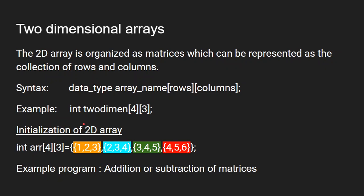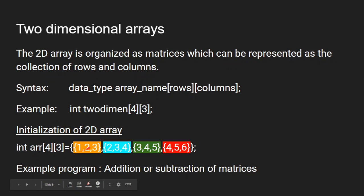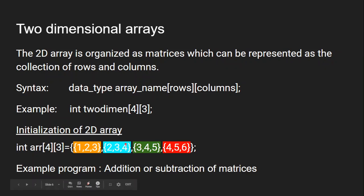How do you initialize a two-dimensional array during declaration? The format is: int arr[4][3], meaning 4 rows and 3 columns. I have shown the values in different colored brackets to differentiate them. There are 3 columns and 4 rows. For row 1: first, second, third column; row 2: first, second, third column; row 3: first, second, third column; and row 4: first, second, third column. This is how to initialize the values of a two-dimensional array.